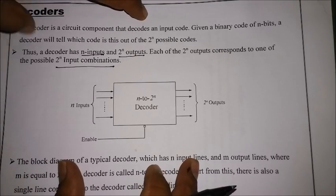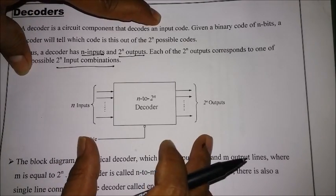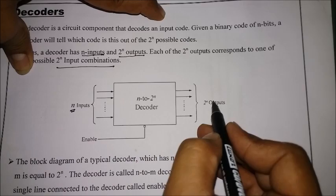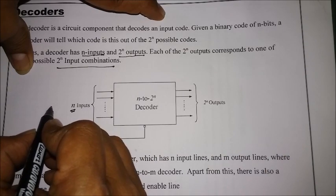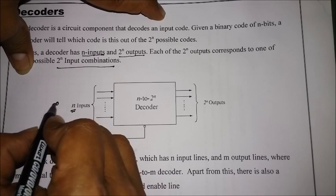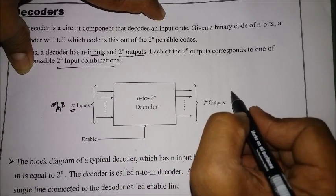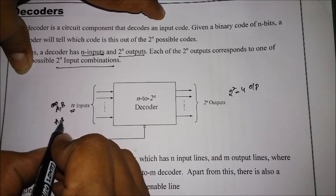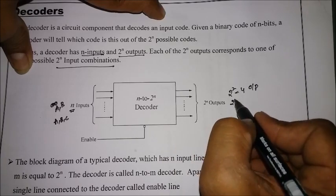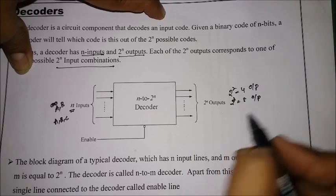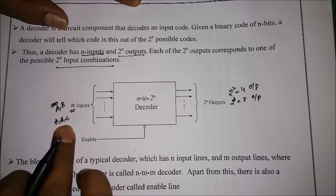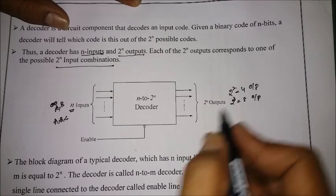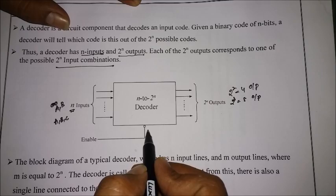Looking at the circuit, it has n inputs and 2^n outputs. For example, if we have two inputs A and B, we get 2^2 = 4 outputs. If we give three inputs A, B, C, we get 2^3 = 8 output lines. One among the 2^n outputs will be selected based on the input value, and the enable is always high.